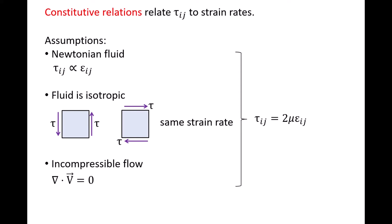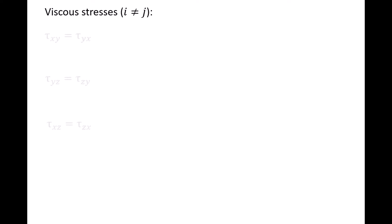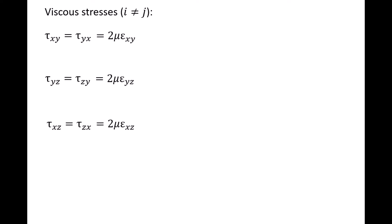A derivation of this relationship can be found in graduate-level fluid mechanics textbooks. For viscous stresses where the subscripts i and j are different, we have the following relationships. The shear stresses are symmetric: tau_xy equals tau_yx, tau_yz equals tau_zy, and tau_xz equals tau_zx. The constitutive relations give that tau_xy equals 2 times the viscosity times epsilon_xy, tau_yz equals 2 times the viscosity times epsilon_yz, and tau_xz equals 2 times the viscosity times epsilon_xz.